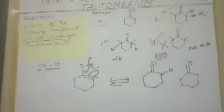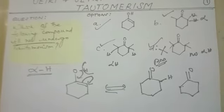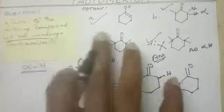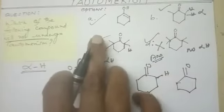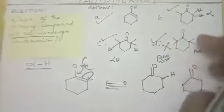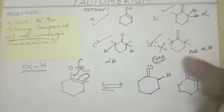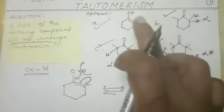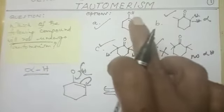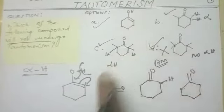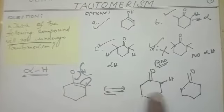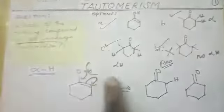Okay children, very beautiful question. Which of the following compounds will not undergo Tautomerism? This is the answer because no alpha hydrogen. The tricky part: it is enol form, not keto — but we showed how enol comes from keto. That compound is also responding. So the answer is D.